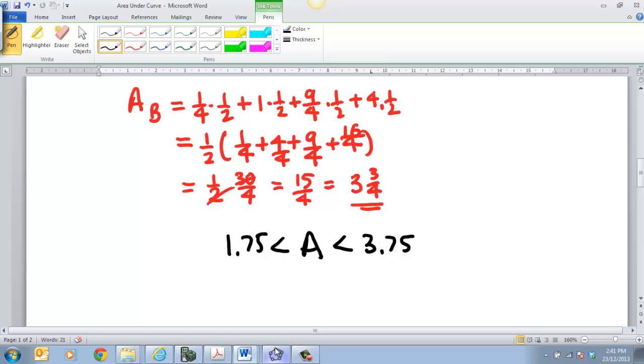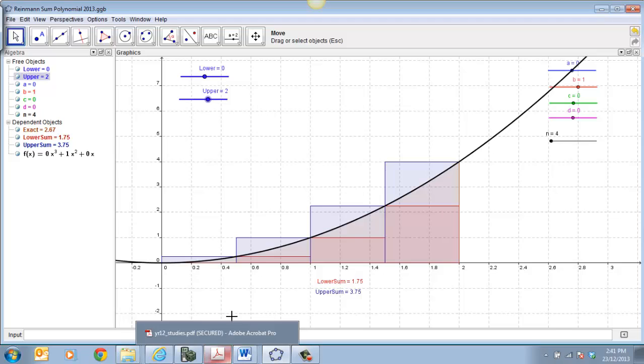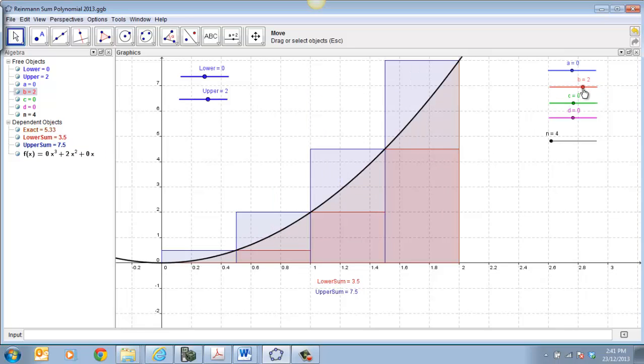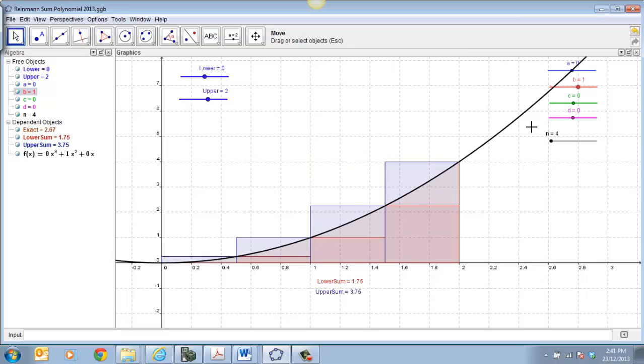I just want to show you how this works on GeoGebra. It's a really useful program. You've got access to this, it's a free program, and I'll dump this on the website for you. What I've done is I've set this up as a polynomial up to the power of three. Now these are my little slider buttons over here. If I move my slider button, I can change the function. But what I've set it to be is x squared. We've set our lower bound there to be zero and upper bound to be two. So that matches with what we've got here.